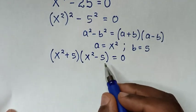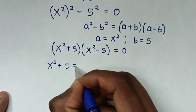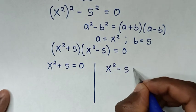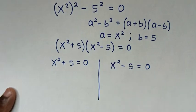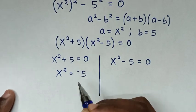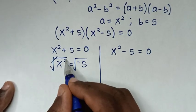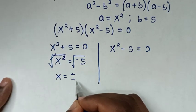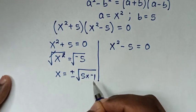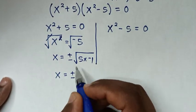From this equation we have two cases. The first case is x² + 5 = 0, and the second is x² - 5 = 0. From the first case, we take 5 to the right side: x² = -5. Applying square root to both sides, x = ±√(-5) = ±√(5 × (-1)).